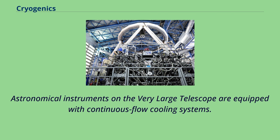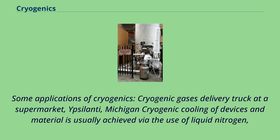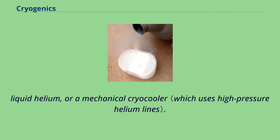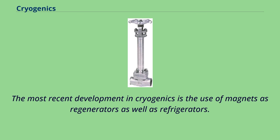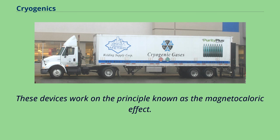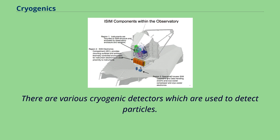Russian aircraft manufacturer Tupolev developed a version of its popular Tu-154 with a cryogenic fuel system known as the Tu-155. The plane uses liquefied natural gas (LNG) and made its first flight in 1989. Astronomical instruments on the Very Large Telescope are equipped with continuous flow cooling systems. Cryogenic cooling of devices and materials is usually achieved via liquid nitrogen, liquid helium, or a mechanical cryocooler. Gifford-McMahon, pulse tube, and Stirling cryocoolers are in wide use. The most recent development is the use of magnets as regenerators and refrigerators, working on the principle of the magnetocaloric effect.